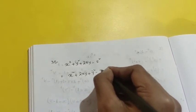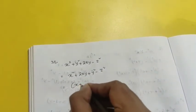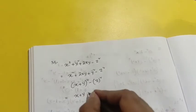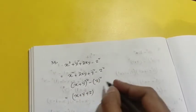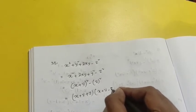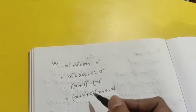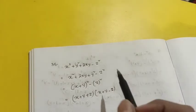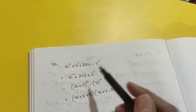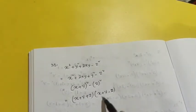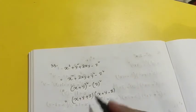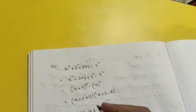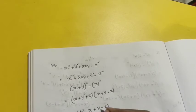Question number 35: the expression is (x + y)² - z². This is (x + y)² - (z)², so it equals (x + y + z)(x + y - z). One of the factors is (x + y - z), so option B is correct.